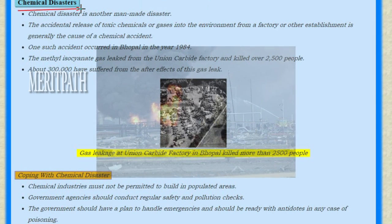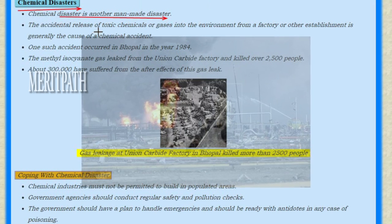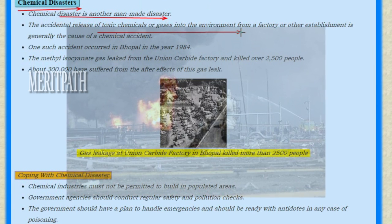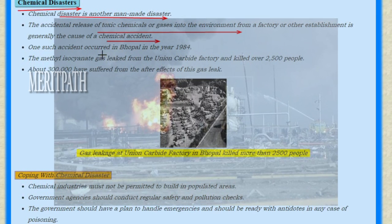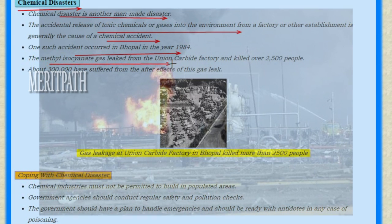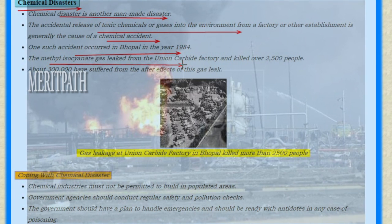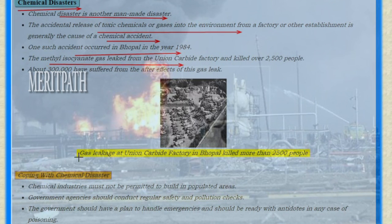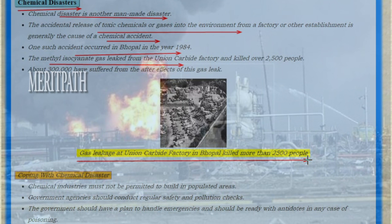Let us now look at chemical disasters. A chemical disaster is another type of man-made disaster, caused due to the release of toxic chemicals or gases in the environment from a factory or any other establishment. An example is the Bhopal disaster in the year 1984, where methyl isocyanate gas leaked from the Union Carbide factory, killing over 2,500 people and causing about 3 lakh people to suffer from the effects of this gas leak. Here you can see an image of the gas leakage at the carbide factory in Bhopal, which eventually killed more than 25,000 people.